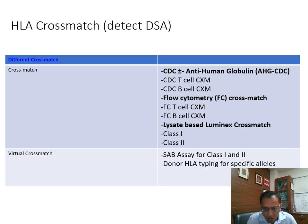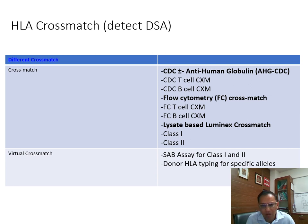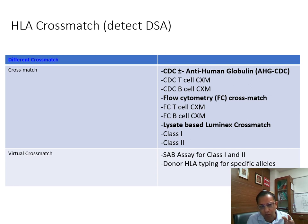The flow cytometry crossmatch is done for T and B cells. The lysate-based crossmatch is different because it checks class 1 and class 2 antibodies rather than T and B cells, making it more specific in that way. If you don't have a flow cytometer in your department, you can use the lysate-based Luminex crossmatch. For the virtual crossmatch: you do a single antigen bead assay in the patient and a donor HLA typing — you virtually check if the patient has antibodies to a donor antigen, and if both are positive, that is a positive virtual crossmatch.